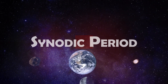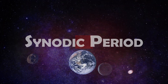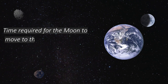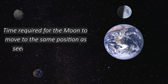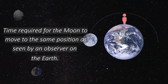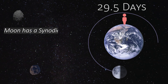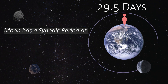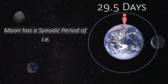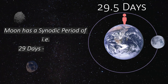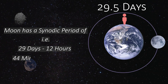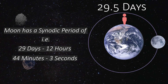Synodic Period is the time required for the moon to move to the same position as seen by an observer on the earth. The moon has a synodic period of 29.5 days, that is 29 days, 12 hours, 44 minutes and 3 seconds.